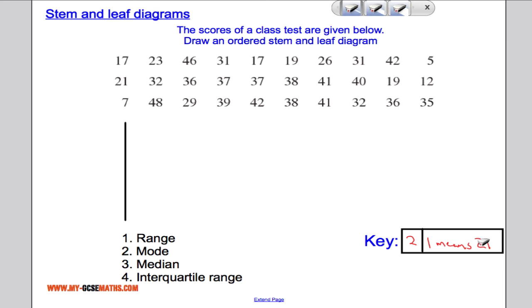So for example, suppose we had data sets using 2.1, 2.3, etc. I could say the 2 with the line and a 1 means 2.1. So it just explains to whoever views the stem and leaf diagram how to interpret it.